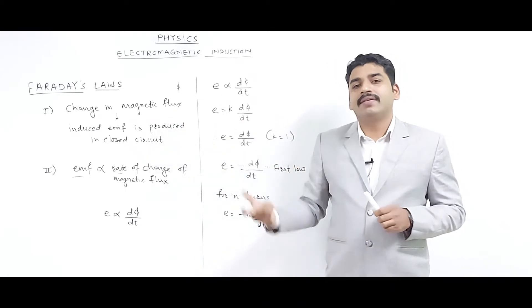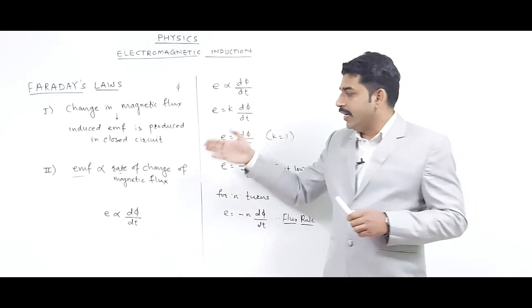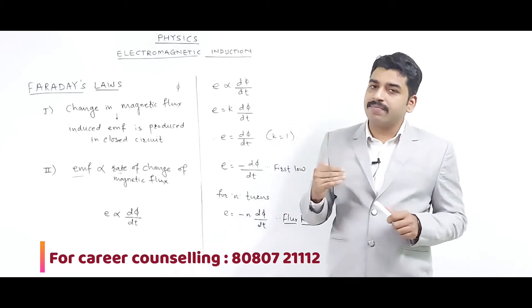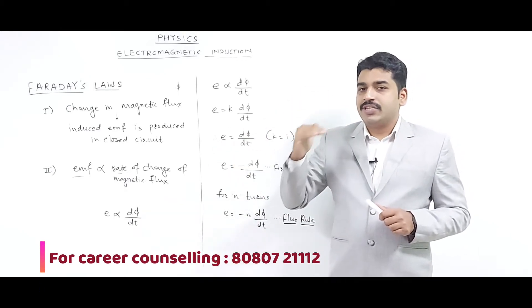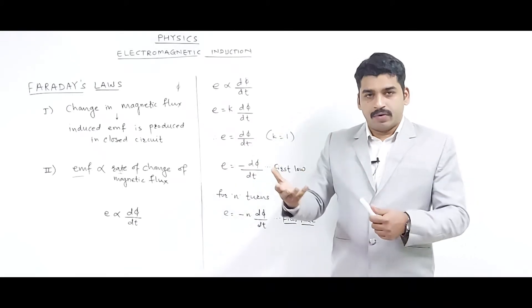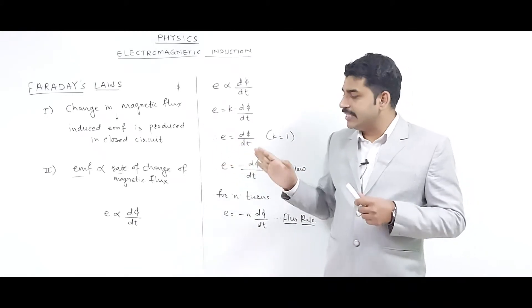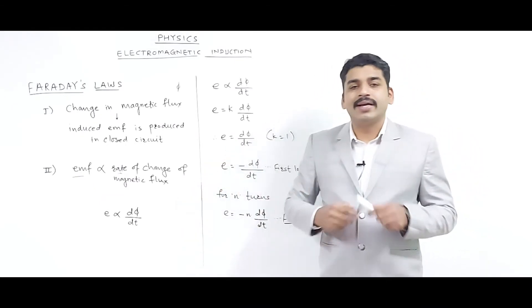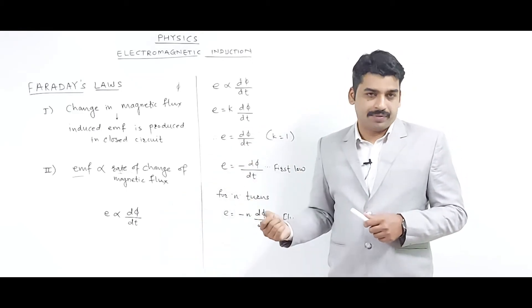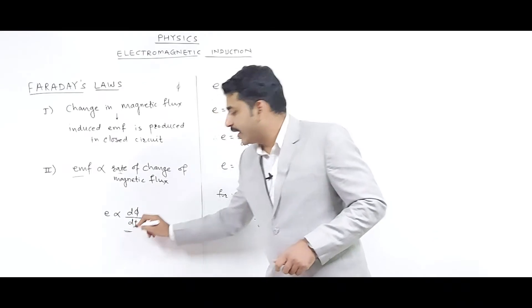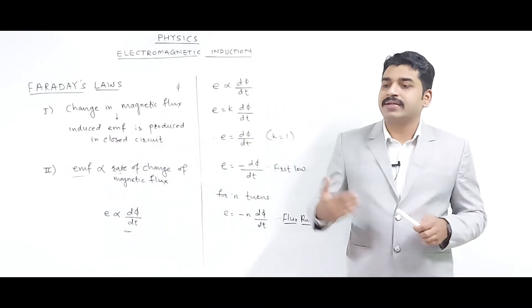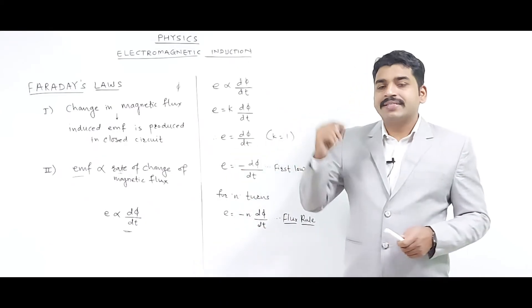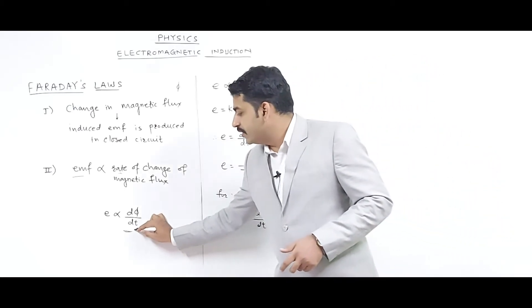The rate at which the magnetic flux changes - this statement is called a quantitative statement, it gives you the quantity of emf. Now whenever we say rate, if anything is changing, for example distance changing or displacement happening with respect to time, we call it velocity. So whenever something is changing, it always changes with respect to time, and when anything changes we denote it by the derivative d by dt.